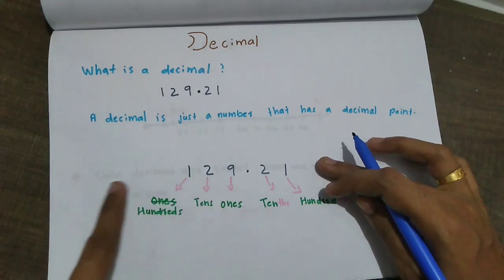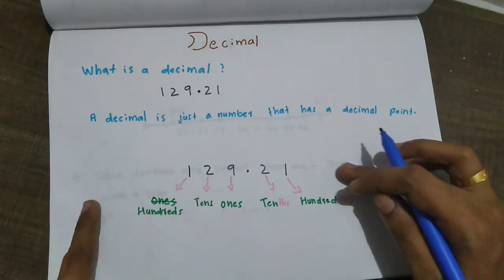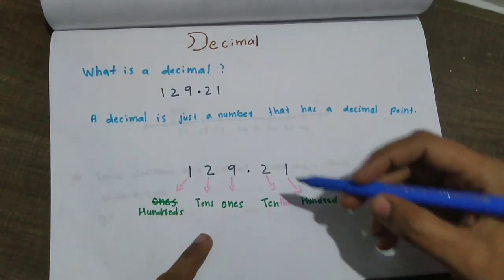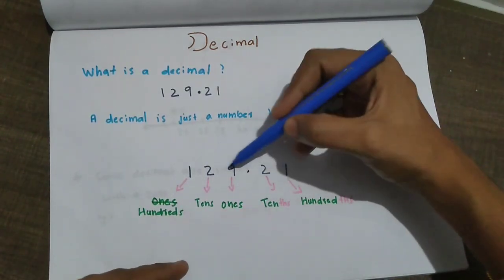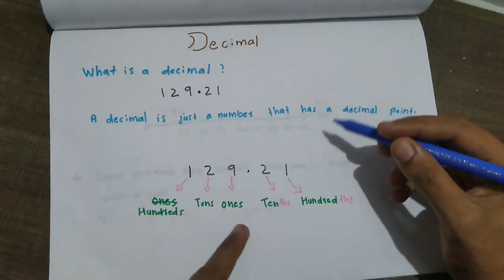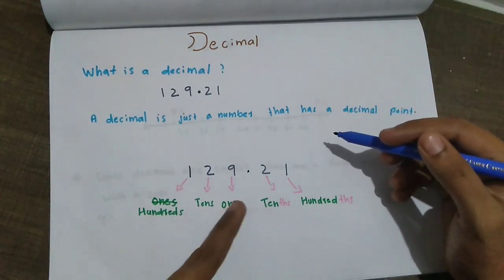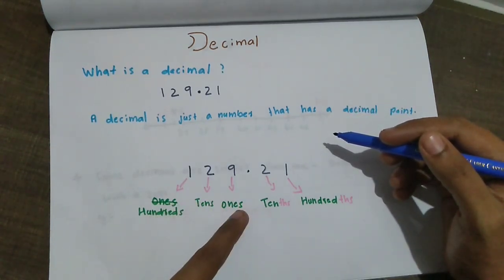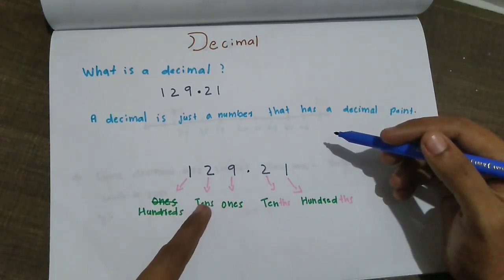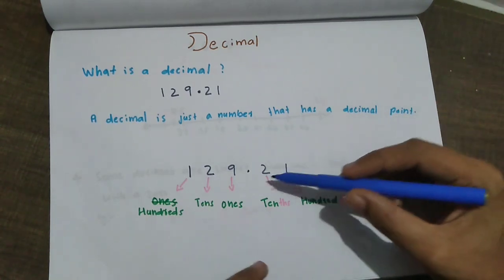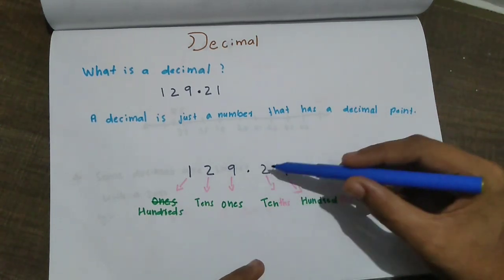For example, 129.21 — this is the number. In that, we look at the first three digits. We go through ones, tens, hundreds. And this one here is a decimal point.